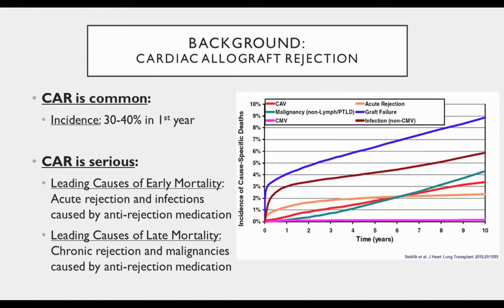Rejection is common and can be deadly — it occurs in 30 to 40 percent of patients in the first year. Acute rejection along with infections caused by immunosuppression medicines represent the leading causes of early post-transplant death. In the later post-transplant period, the leading causes of death are sequelae of chronic rejection along with malignancies, which are also a consequence of the immunosuppression medicines we use. Post-transplant care is really all about immunosuppression — trying to use just enough to prevent rejection without increasing the risk of infections and cancers.